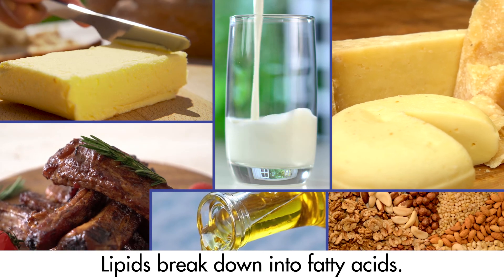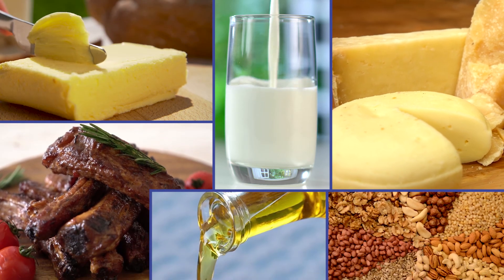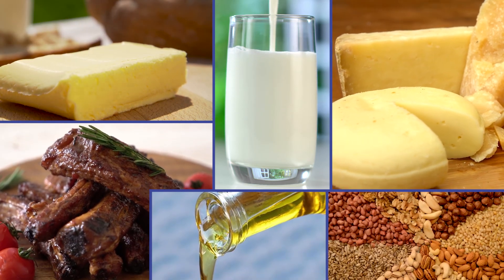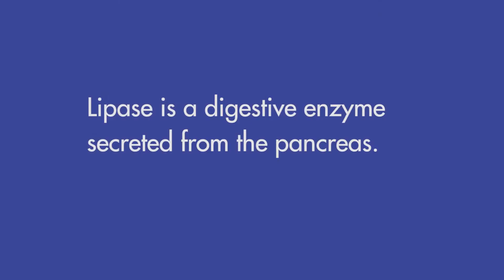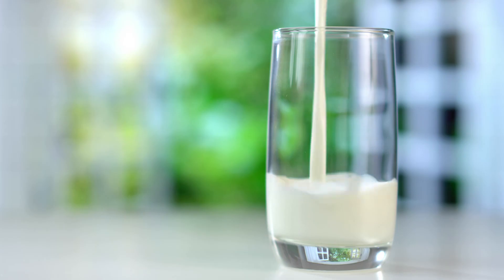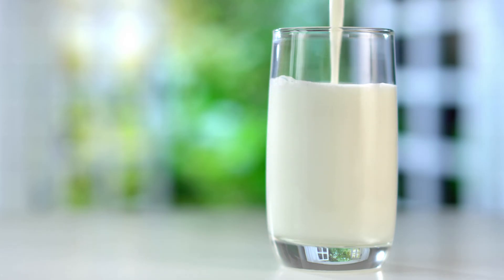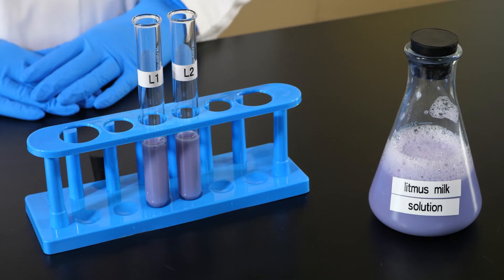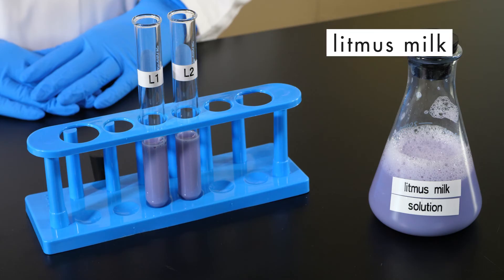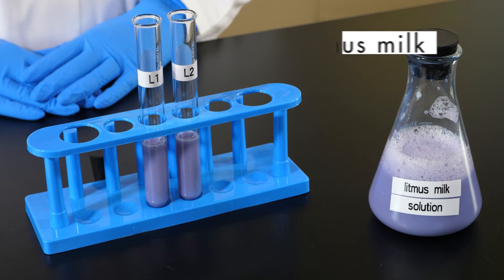Lipids break down into fatty acids. Lipids are digested by lipase, which is a digestive enzyme secreted from the pancreas. We will use milk for this experiment, because it has a high concentration of lipids. This type of milk is called litmus milk, because a chemical indicator called litmus has already been added to it. Litmus will help us determine if lipid digestion has taken place.